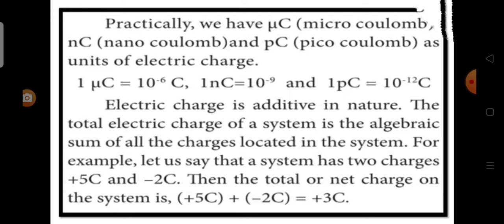Electric charge is additive in nature. The total electric charge of a system is the algebraic sum of all the charges located in the system. For example, let us say that the system has two charges, plus 5 coulomb and minus 2 coulomb. Then the total or net charge on the system is plus 3 coulomb.